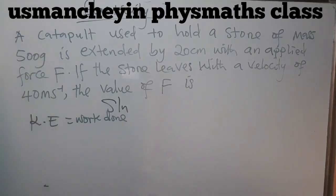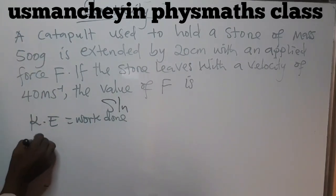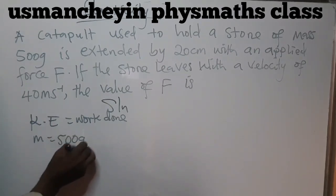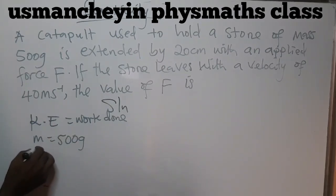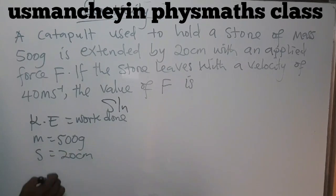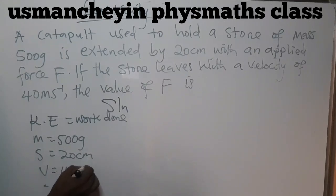Let's bring out our parameters. The mass is given by 500 grams. The distance, which can also be extension, is given by 20 centimeters. And the velocity or speed is given by 40 meters per second.